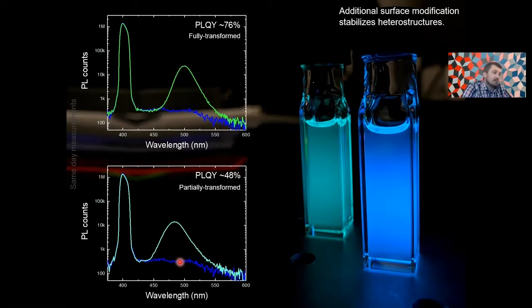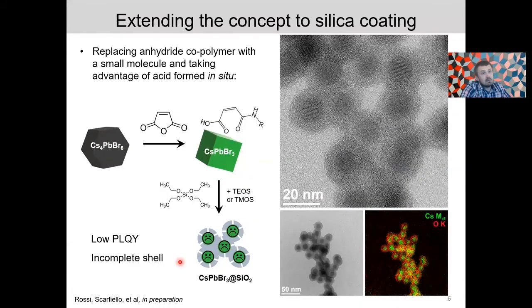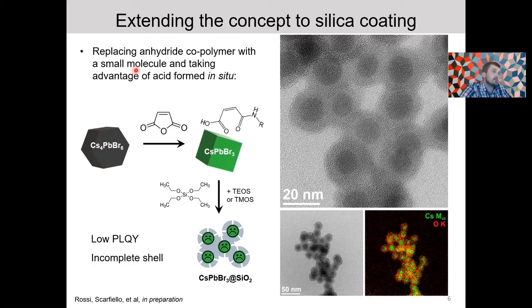So what else is this chemistry good for? Well, it turns out that we can extend this amine anhydride reactivity concept to silica coating. So in that case, we replaced copolymer with a small molecule anhydride and then took advantage of the acidification of the medium and added tetraalkoxysilanes. And after optimizing reaction conditions, we were able to obtain samples consisting of metal halide cores capped with amorphous silica shells.